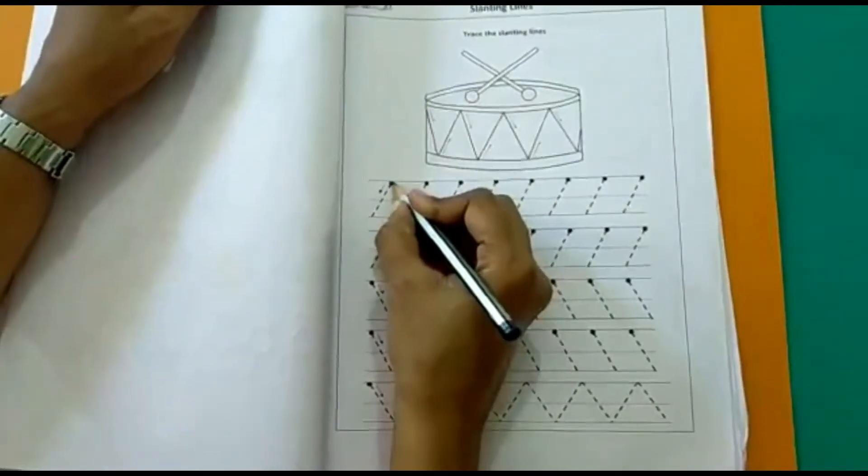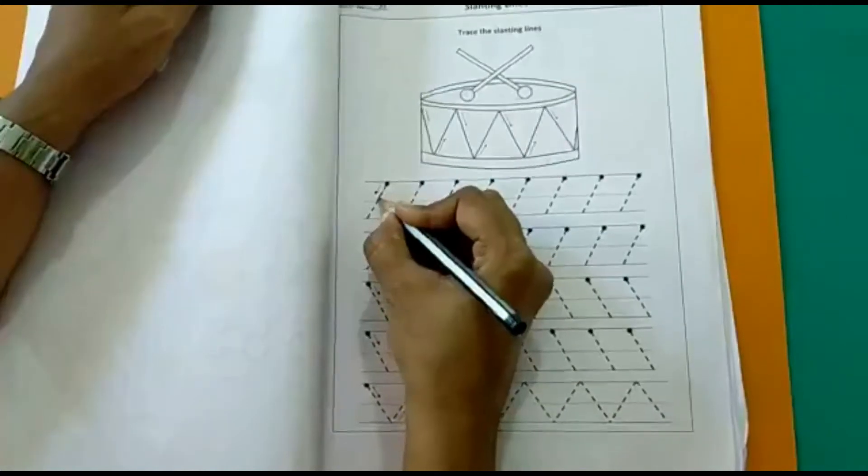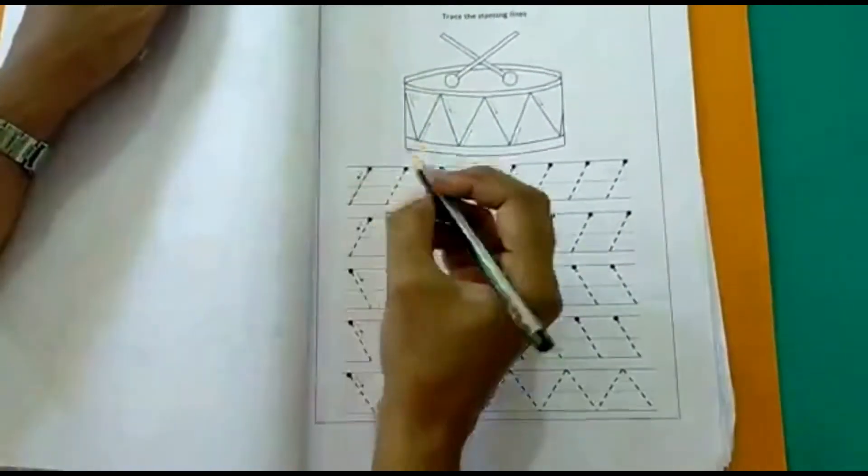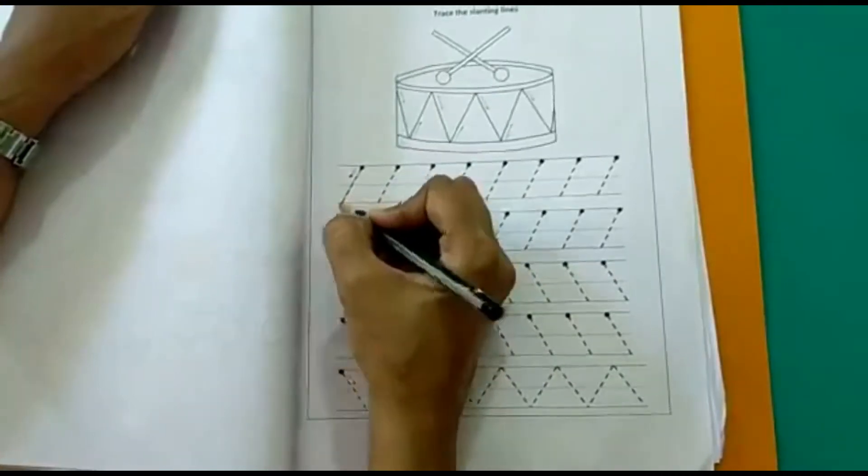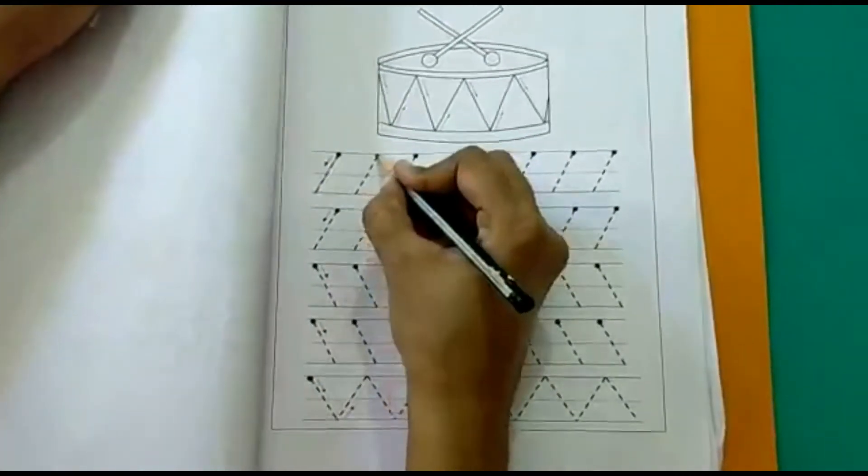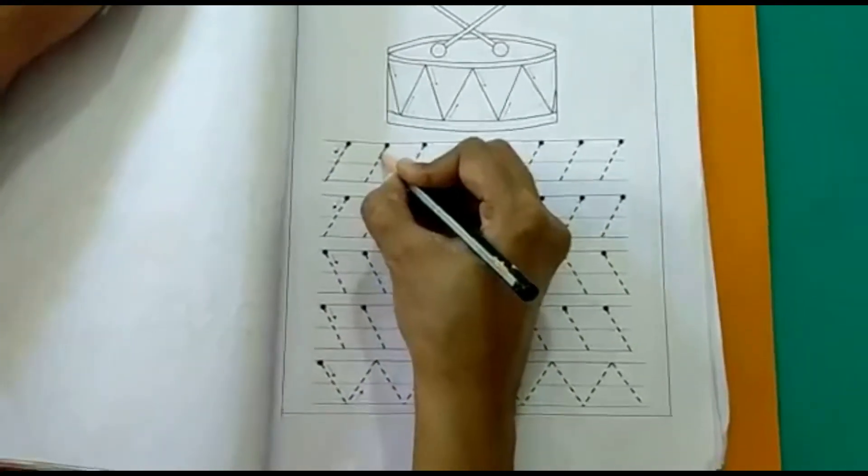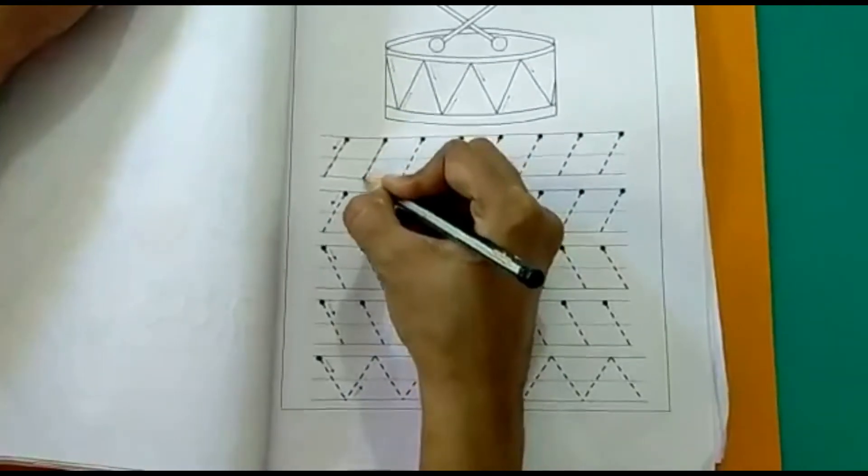So here first we will trace slanting line to the left. This is the left side. So this is slanting line to the left. Do it very slowly and join the dots. Slanting line to the left.